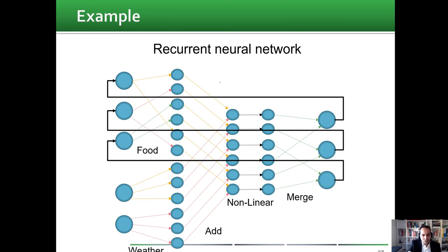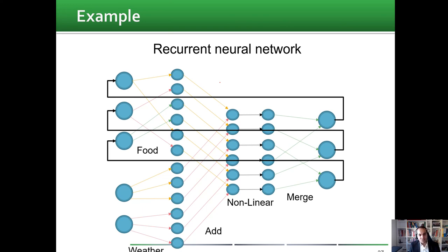You can use a model with memory inside — which is a recurrent neural network. That's enough for this video. In the next video, we will see together how to implement a recurrent neural network for our task and what elements inside the model we should configure. Thank you for listening and see you in the next video.